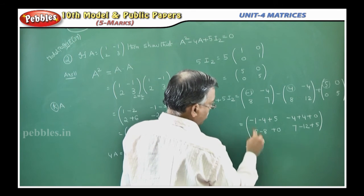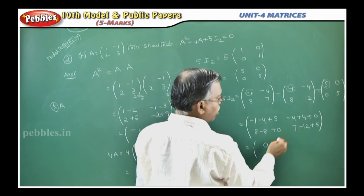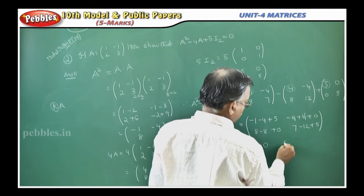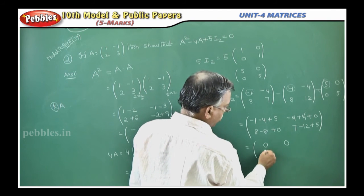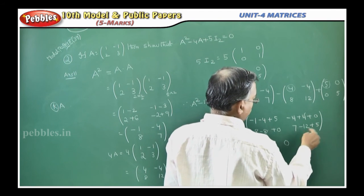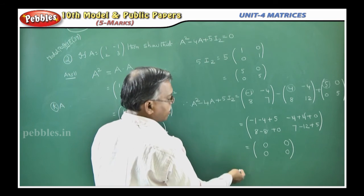See here, minus 5 plus 5 is 0, minus 4 plus 4 cancel 0, these two cancel 0. Here 7 plus 5 is 12, 12 minus 12 is 0. That is it, you got the 0 matrix.